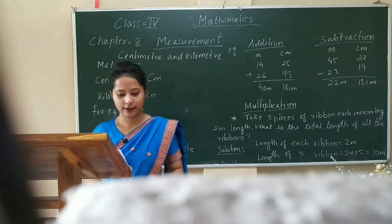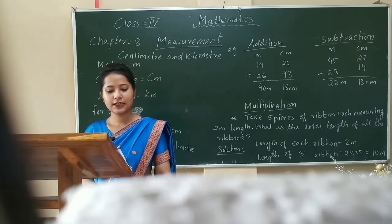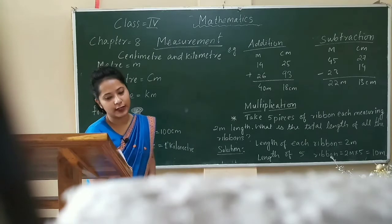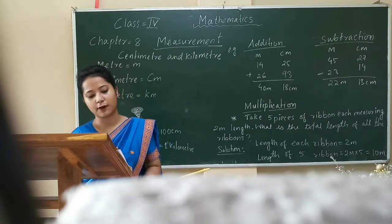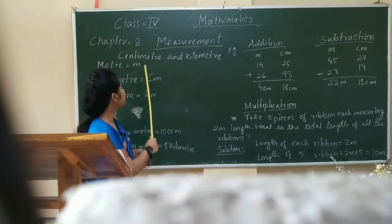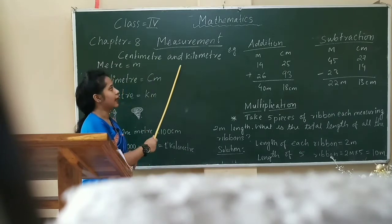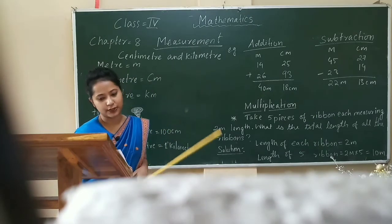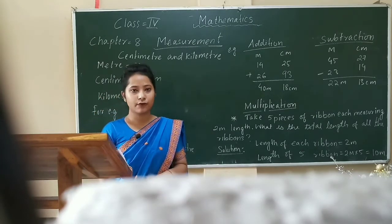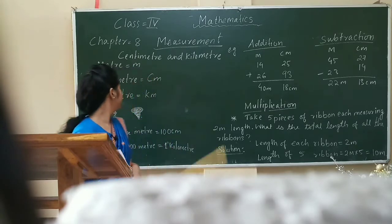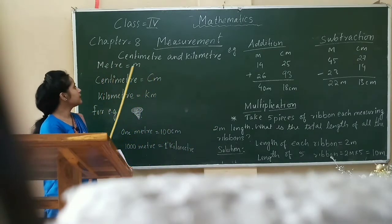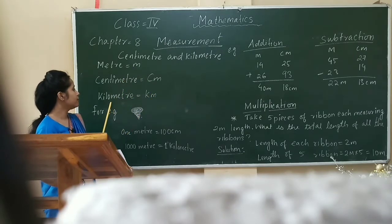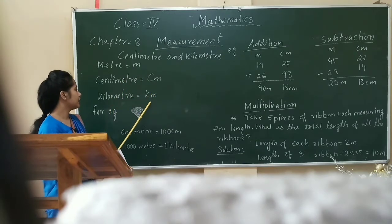Measurement of length. Meter is the standard unit of length. The multiples and submultiples of meters are centimeter and kilometer. The short form of meter is m, centimeter is cm, and kilometer is km.